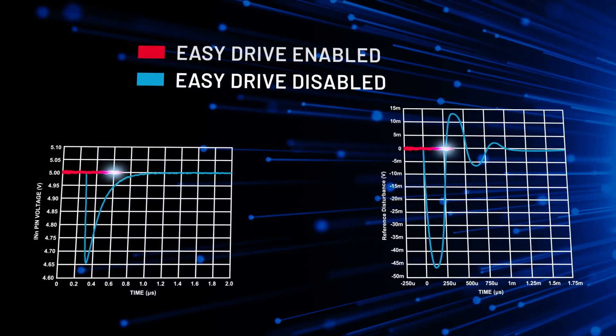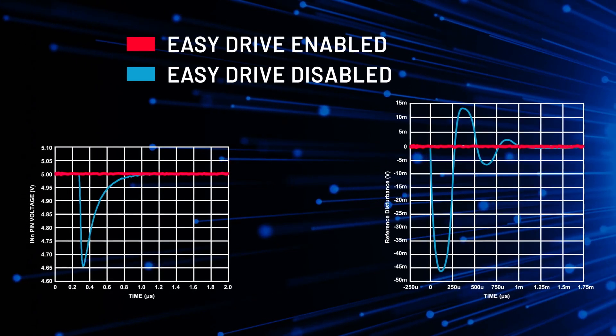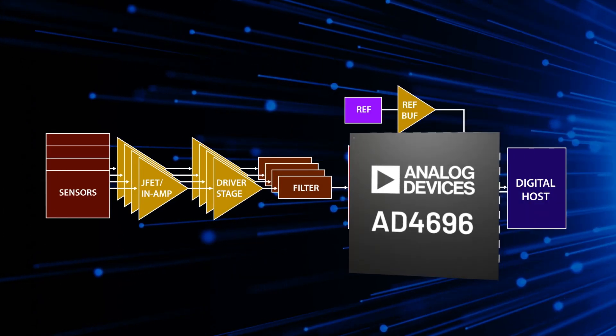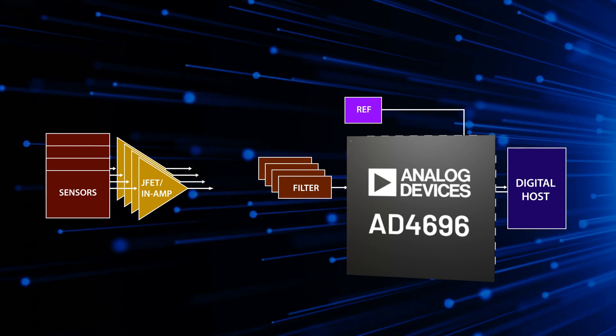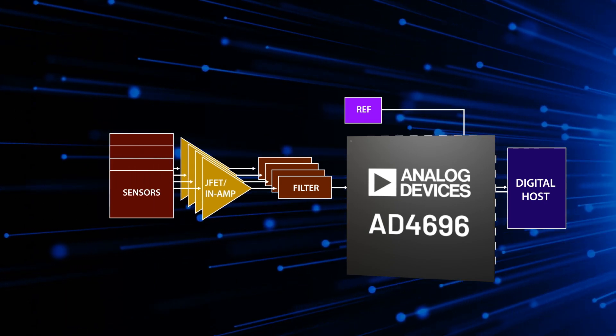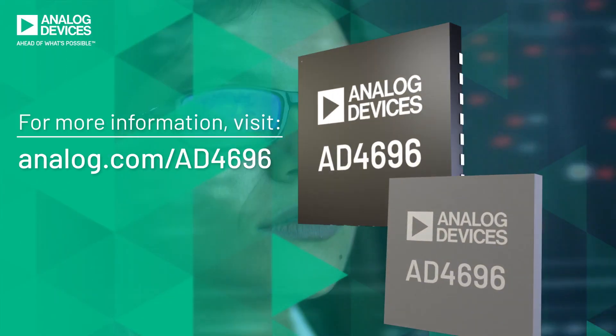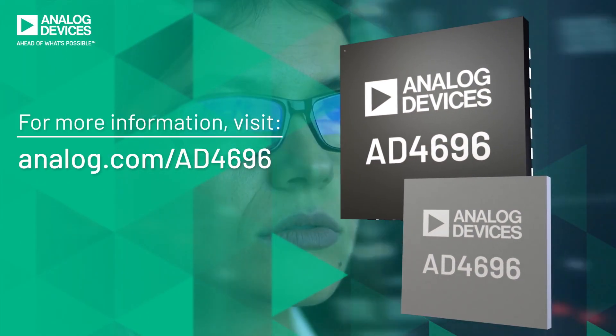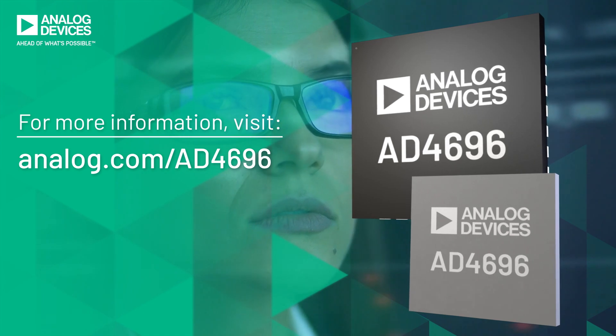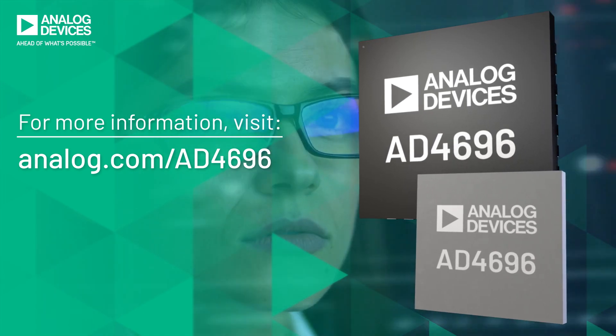By applying ADI's EasyDrive mode to every input channel, the AD4696 enables signal chain simplification by broadening the selection of compatible companion devices. With 16 channels of compact, flexible simplicity, the AD4696 is the ADC for your high-density applications.